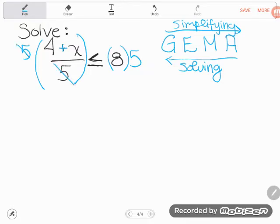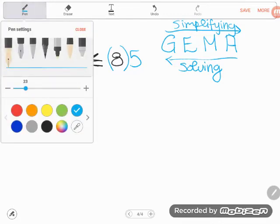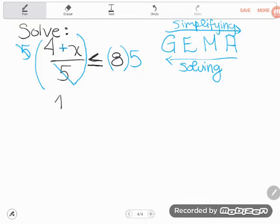So on the left hand side, let's see what will happen. Multiplying and dividing by five cancel. So all I'm going to be left with now on the left hand side of my inequality is four plus x.